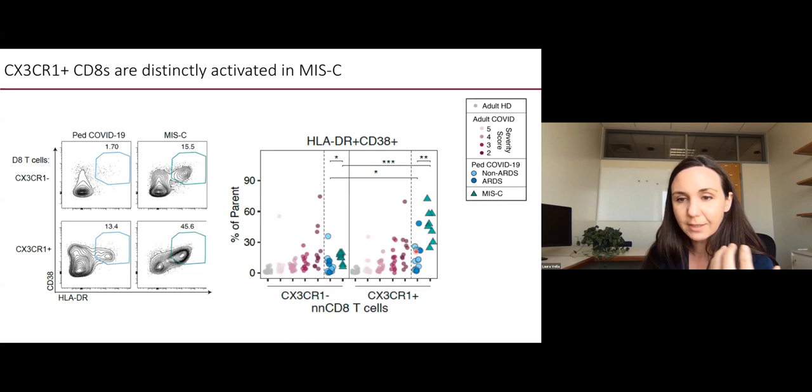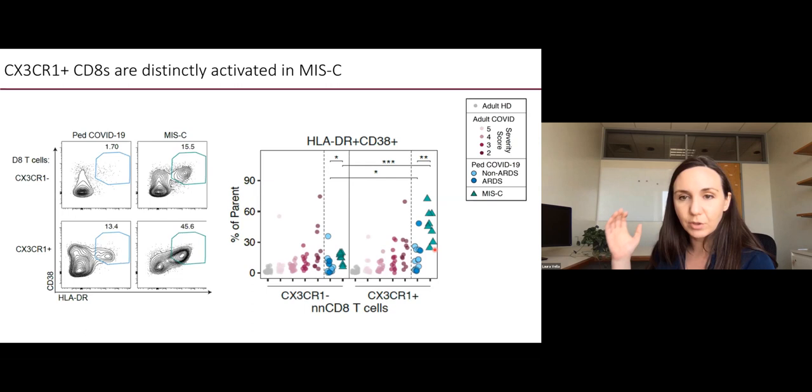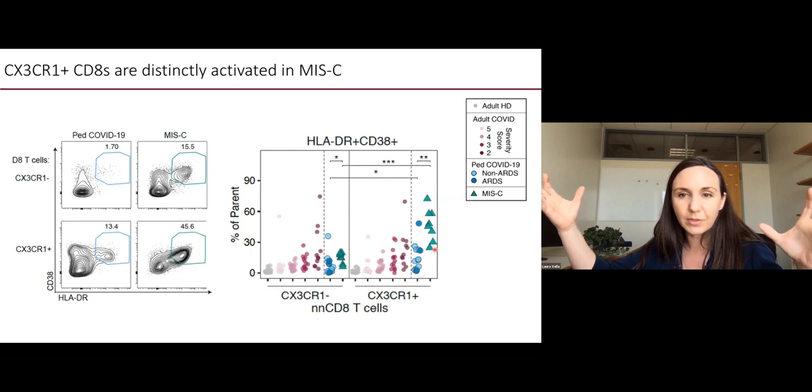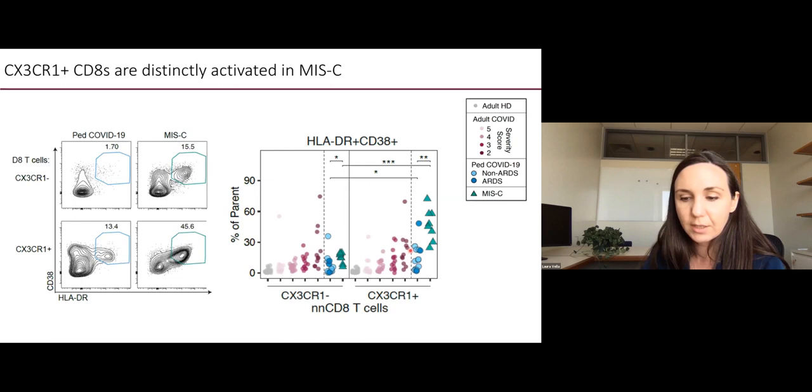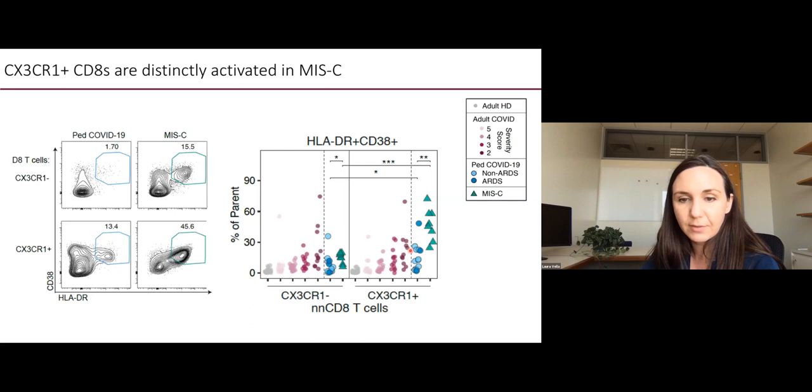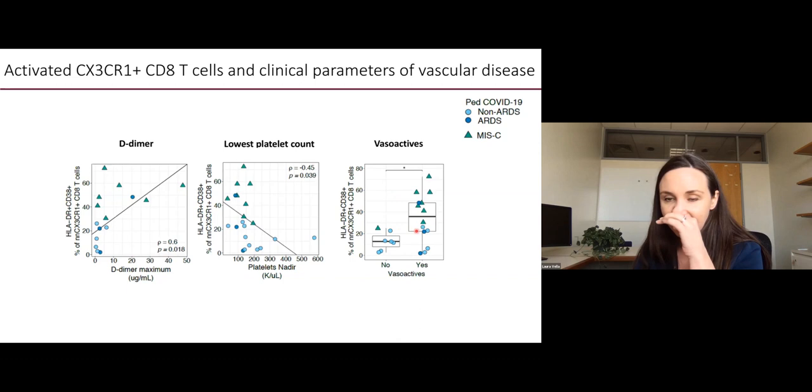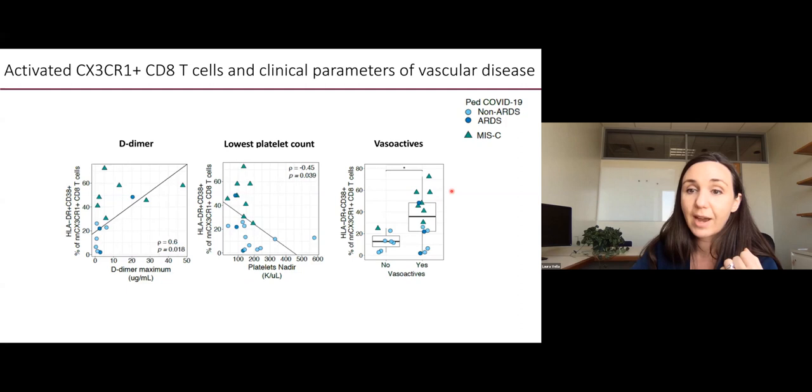We noticed that there was a preferential activation of CX3CR1 positive cells, even compared to CX3CR1 negative cells in MIS-C. But we can also see that there exists activation of these cells in adults and in children with acute COVID-19. We wondered whether here MIS-C was giving us an opportunity to interrogate the biology of this continuum of disease that starts with acute illness and can progress to a longer form or a MIS-C form, the role of these cells in vascular manifestations.